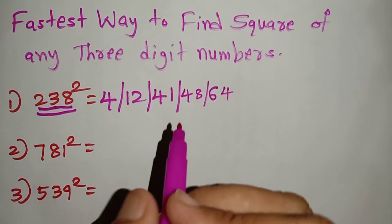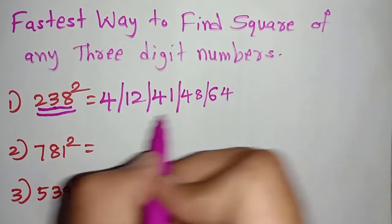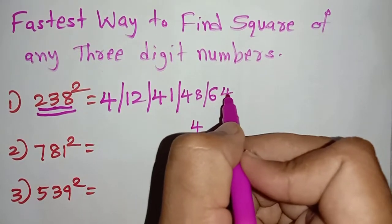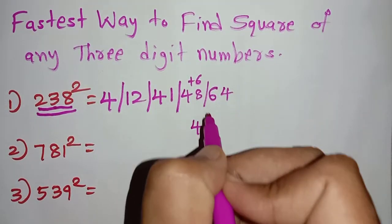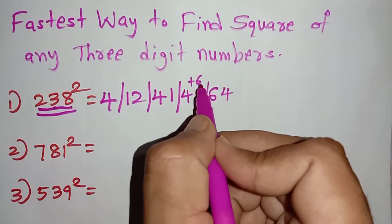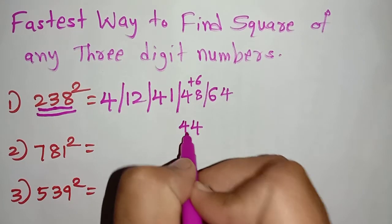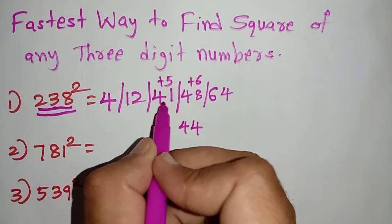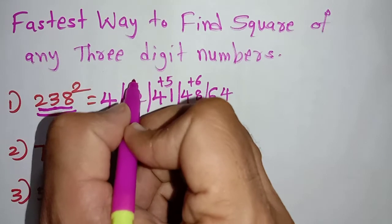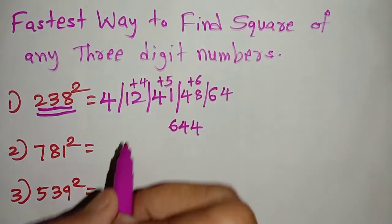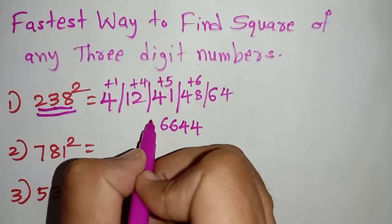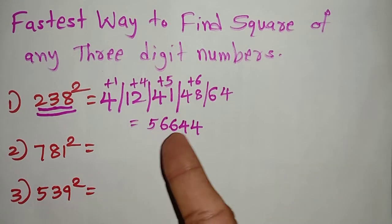After finding all the parts we have to add. Write 4 as it is. Then 48 plus 6 is 54 — write 4 and carry 5. Then 41 plus 5 is 46 — write 6 and carry 4. Then 12 plus 4 is 16 — write 6 and carry 1. Then 4 plus 1 is 5. So the answer is 56,644.